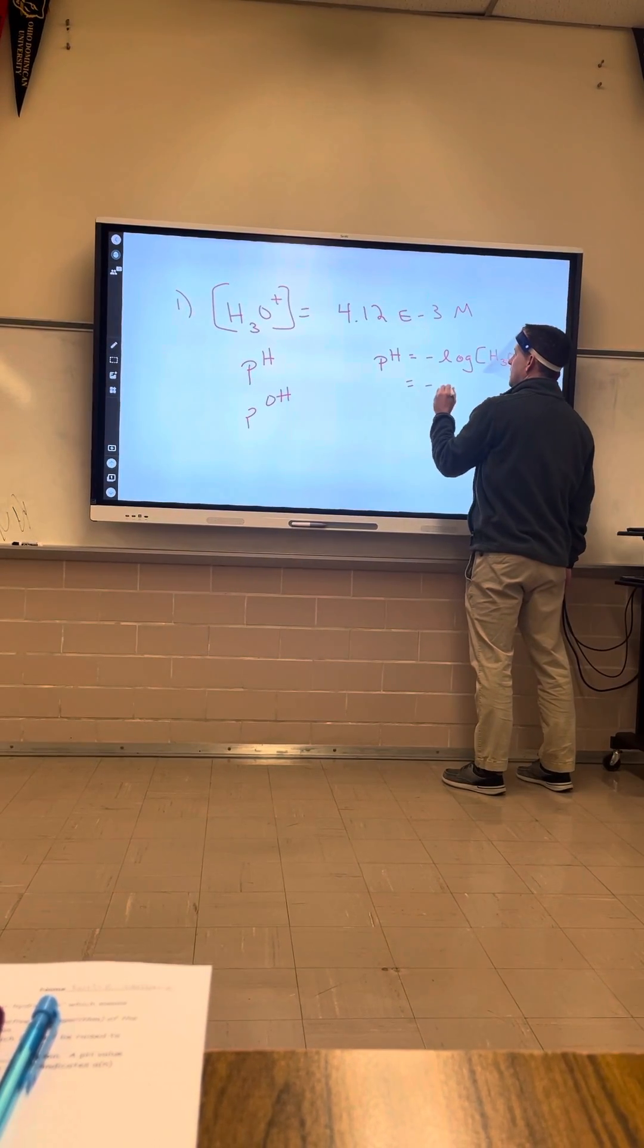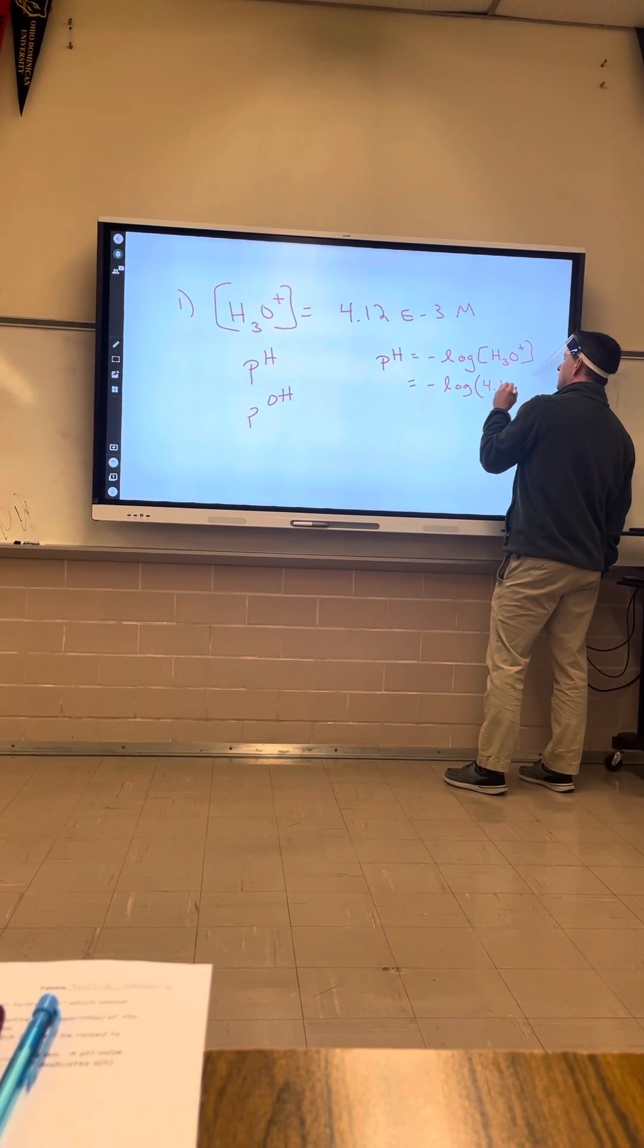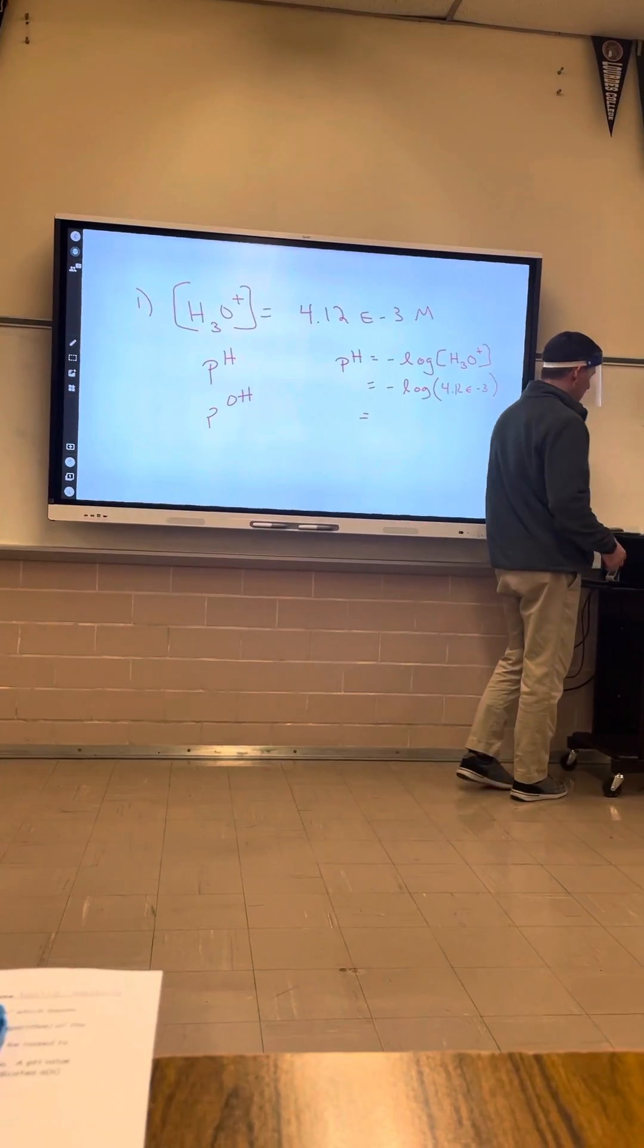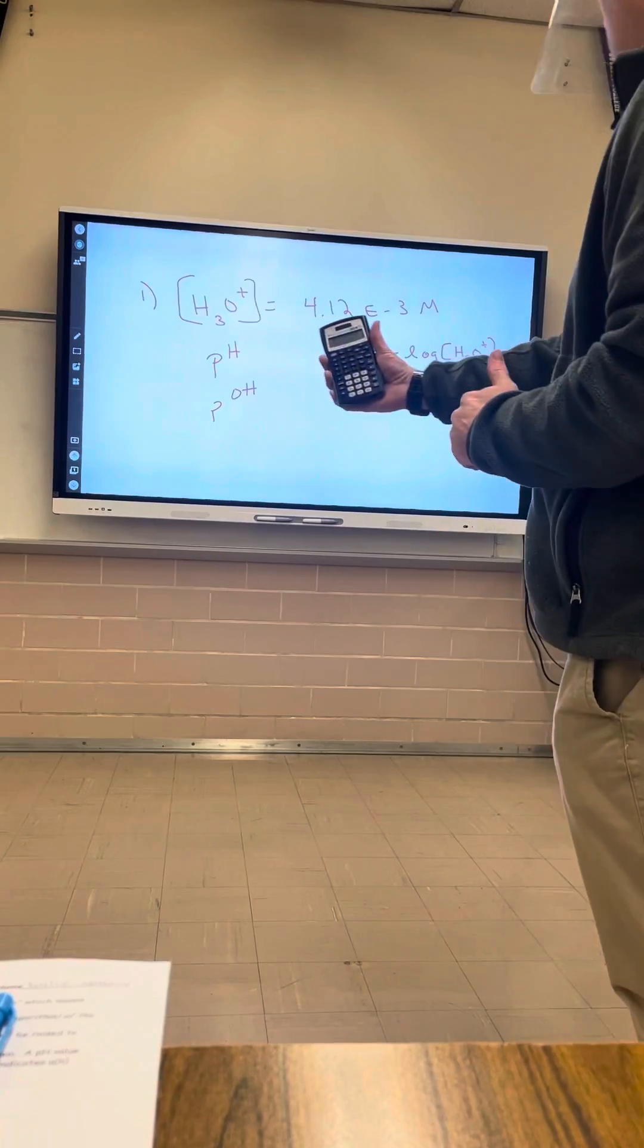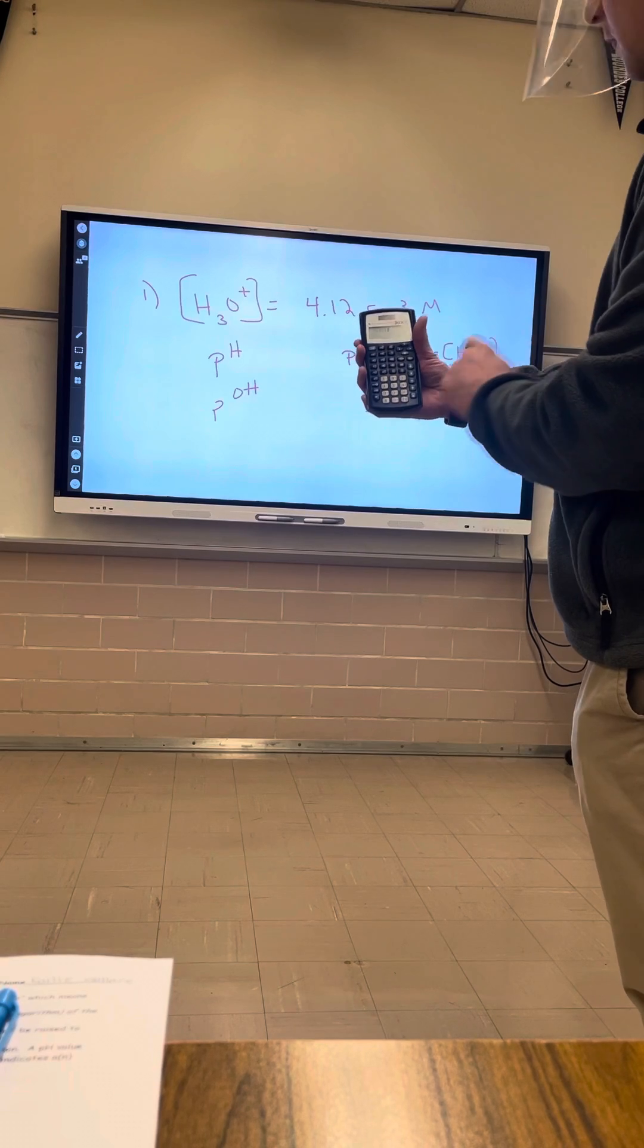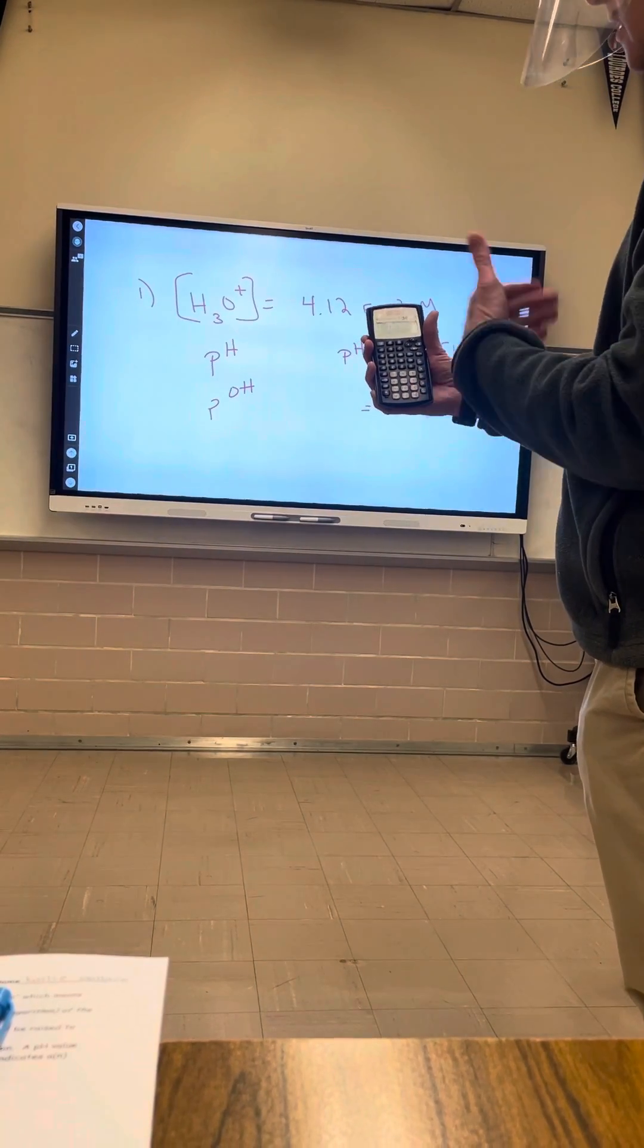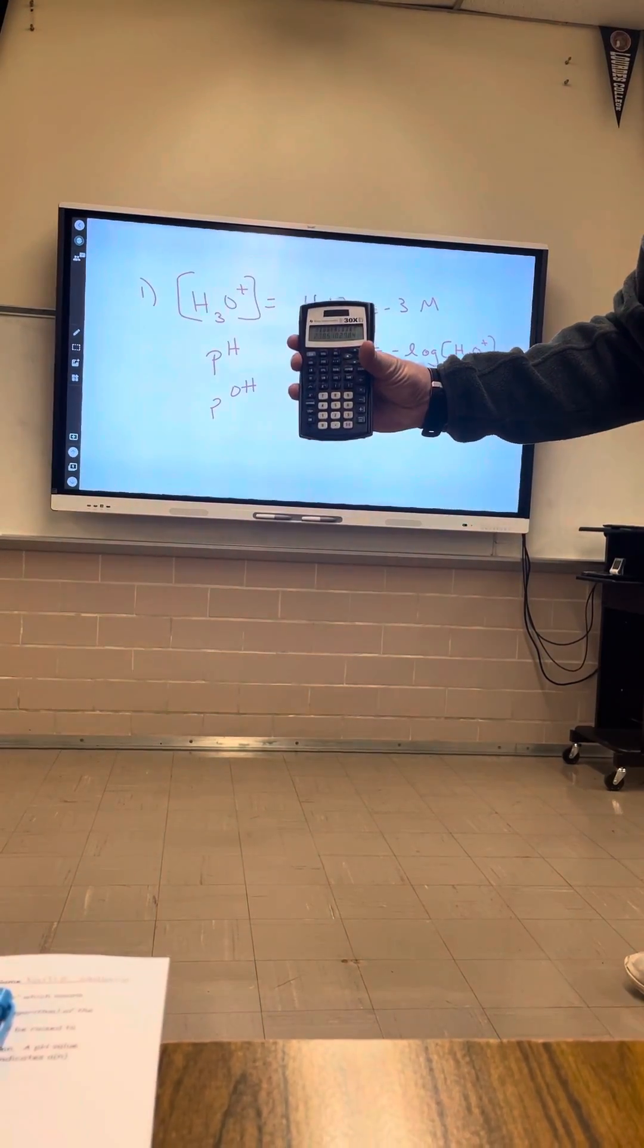So it equals negative log of 4.12 E to the minus 3. I'm going to bounce back and forth with a TI-30XA and a TI-30X2S showing you how to punch these in. First one, we punch the negative sign, hit the log button, 4.12 E button, negative 3. It does not matter if you close the parenthesis out or not. And the answer is 2.4.